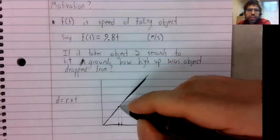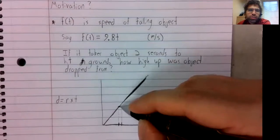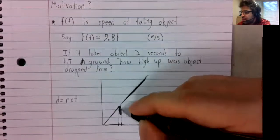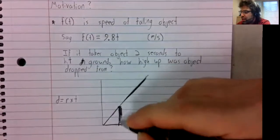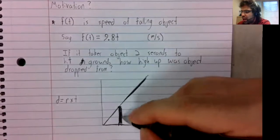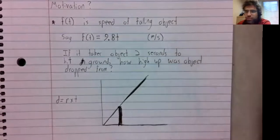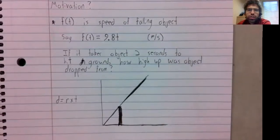If we treated this rate as constant, the distance it falls is the rate times the time. And the rate times the time is the area of this rectangle.